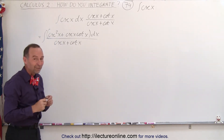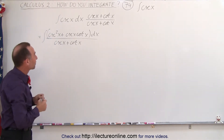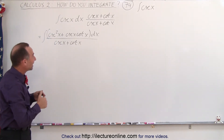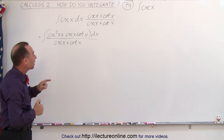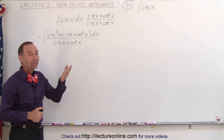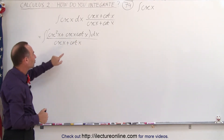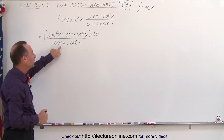And in the denominator, we also get the cosecant of x plus the cotangent of x. Now you tell yourself, did that improve things? Well, it turns out it did, because the numerator happens to be almost the exact differential of the denominator.